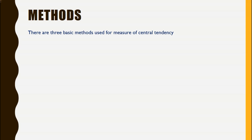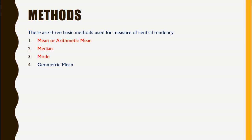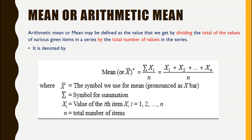There are three basic methods used for measure of central tendency. These are mean, also known as arithmetic mean, median, and mode. In addition to these three methods, there is one more method that is also commonly used, and that is geometric mean. The arithmetic mean may be defined as the value that we get by dividing the total of the values of various items in a series by the total number of values in the series. The mean of any series is denoted by x-bar.